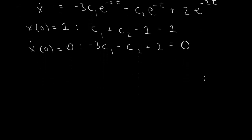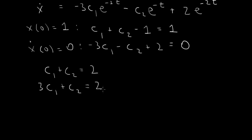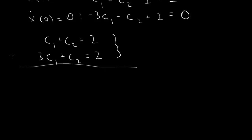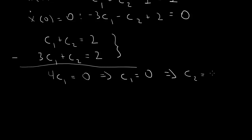This is a system of linear equations. Rewriting: c1 plus c2 equals 2, and 3c1 plus c2 equals 2. Subtracting the first from the second eliminates c2 — the 2's cancel — giving 2c1 equals 0, so c1 equals 0. From the first equation with c1 equals 0, we get c2 equals 2.